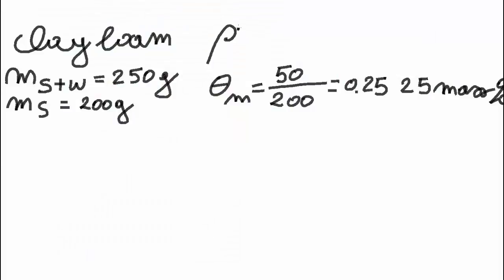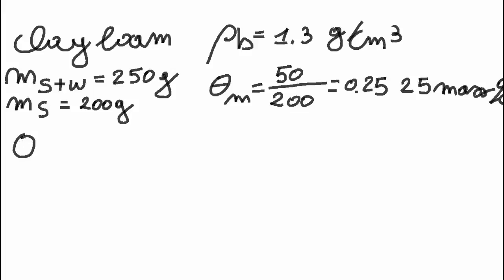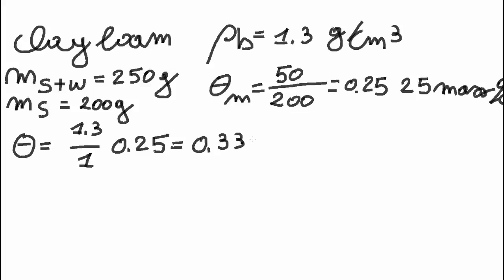The bulk density of the clay loam is 1.3 grams per cubic centimeter. To determine the volumetric water content, we take the ratio of the bulk density to the density of water, which is 1, and multiply it with the previously determined mass water content of 0.25. The volumetric water content is 0.33 cubic meters of water per cubic meter of soil, or 33 volume percent.